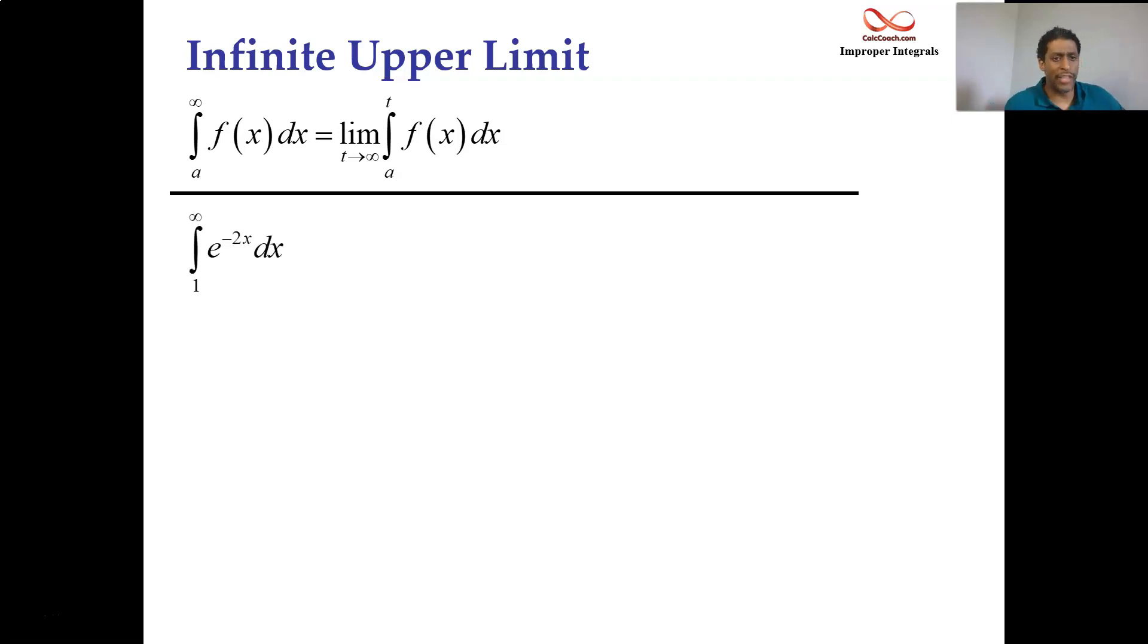We have the integral from 1 to infinity of e to the negative 2x. What's the area under the curve from 1 to infinity of this particular function, this exponentially decaying function e to the negative 2x? So according to what's above there, rip out the infinity, put in a t, and do the limit as t approaches infinity.